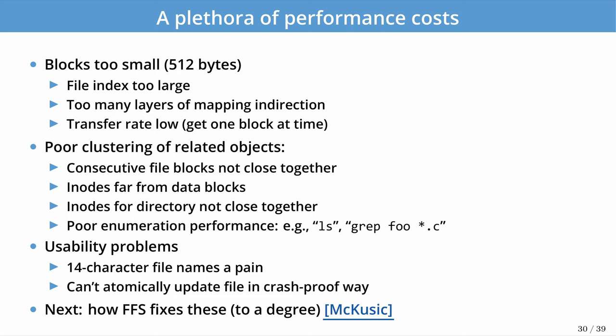All of this led to poor performance when enumerating many objects — running grep across files, archiving with tar, or extracting archives. There were also usability problems: file names were limited to 14 characters and couldn't be updated in a way that survived a crash. The Fast File System, written by McKusick, solved these by understanding these intuitions and analyzing the system.